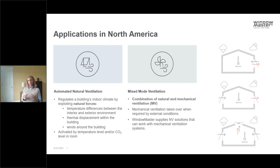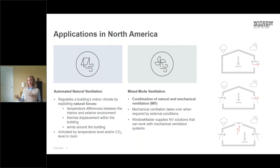In North America, window automation is typically used for natural ventilation — using the outside environment and bringing it into a built environment, either through simple open/close with a keypad or using sensors and algorithms to bring outside air in intelligently. Mixed mode, or hybrid ventilation, means using natural ventilation at certain times of the year and mechanical systems at other times. These are great solutions where window actuators play a key role.